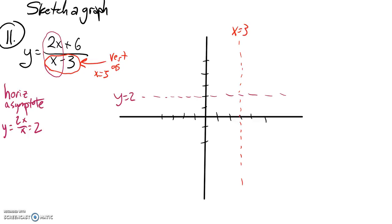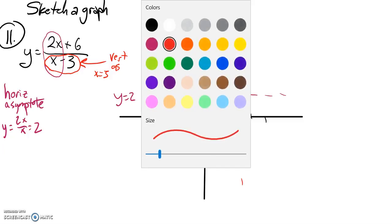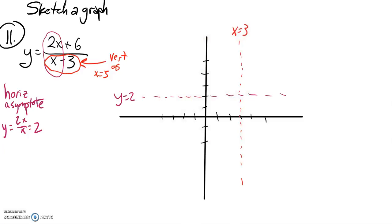x-intercept and y-intercepts are actually pretty easy to find as well. For my x-intercept, where it crosses the x-axis, that's when y is 0, when the height is 0. It happens when the numerator is 0, because the denominator can't be 0. My x-intercept happens when that equals 0, and notice it's at negative 3.